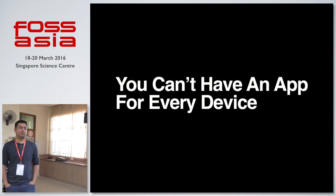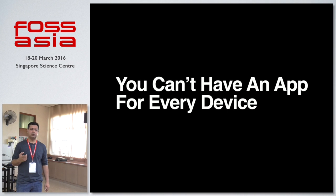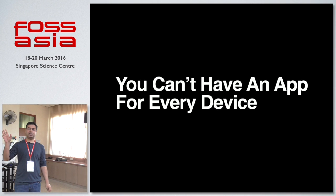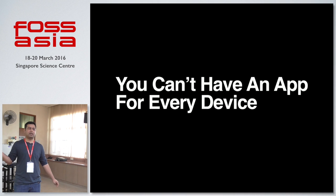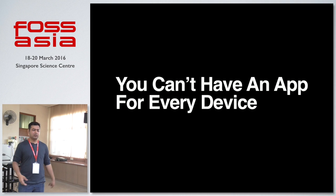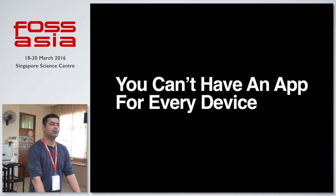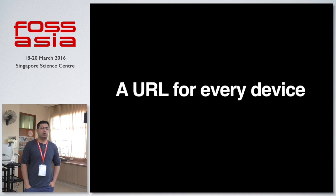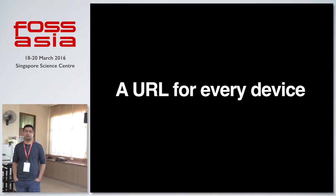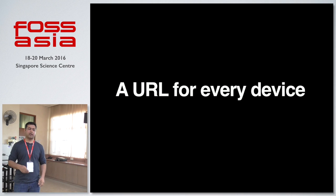Even if there's a device which you know is just a one-time use, you'll have to install an app. Have you seen the app updates on Android? Sometimes one app update would be like 50 MB per app, sometimes it's like 100 MB. Why would you want to do this for something which is a one-time use? A much better idea would be a URL for every device. You have a URL, a unique one. You come across a device, you go there, you interact with it, close the tab — done. Isn't that a much better way to interact?